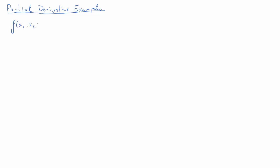Here is the first example. We have a function f of two variables x1 and x2, and in particular the function is 3x1 plus 1 over x2 to the power of 3, plus lambda times x1. Lambda is just another variable, but for the purpose of this it is just a constant.